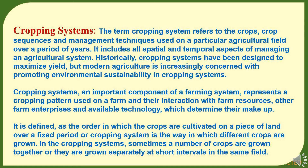Cropping systems, an important component of a farming system, represents a cropping pattern used on a farm and their interaction with farm resources, other farm enterprises, and available technology which determine their makeup. It is defined as the order in which the crops are cultivated on a piece of land over a fixed period, or cropping system is the way in which different crops are grown.